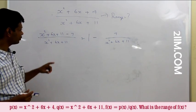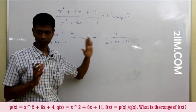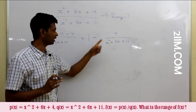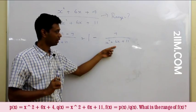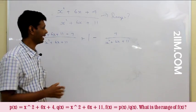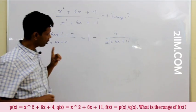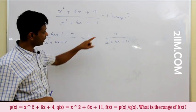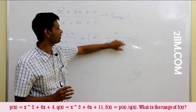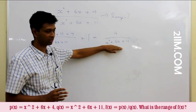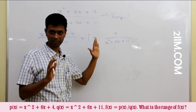Now, instead of dealing with two quadratics, I've simplified it to one quadratic. All I need to do is find the range of 7 / (x² + 6x + 11). If I find that, I'm through — I can accommodate the '1 minus' later. For that, I need to find the range of x² + 6x + 11, then find 7 divided by it, then find 1 minus that.